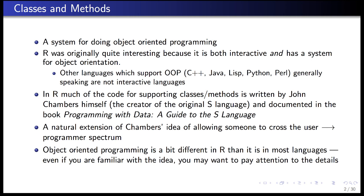The idea behind classes and methods is a natural extension of Chambers' original idea of allowing someone to cross from user to programmer. Remember the spectrum that underlined the philosophy of the S language — to allow people to introduce themselves as users, and then as they develop more complicated needs, they can become programmers and develop new types in R. The classes and methods system is really for the programmer end of the spectrum.